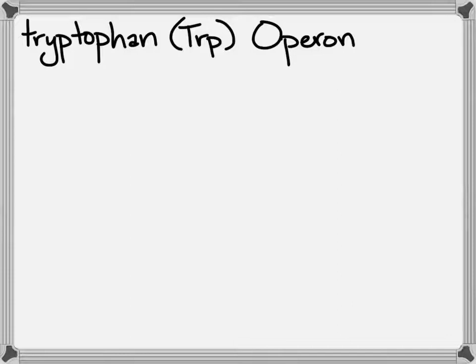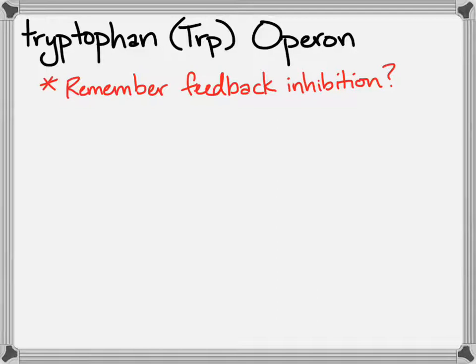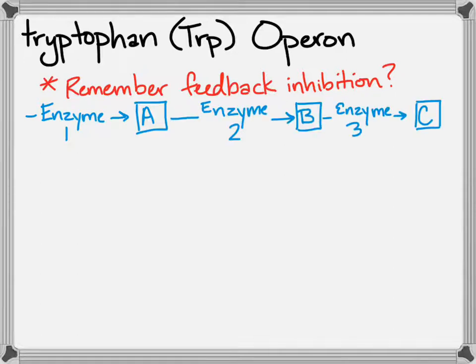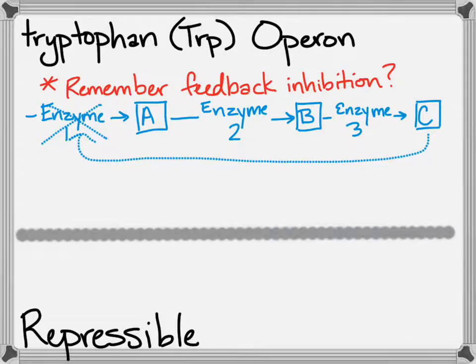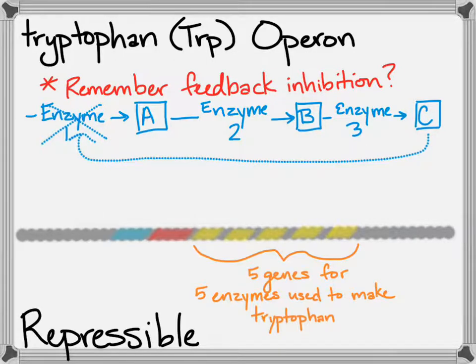Now let's look at one of the two classic operon examples. The trp operon, or tryptophan operon, has a lot to do with feedback inhibition — where a series of enzymes produce a series of products and the final product goes back and shuts off the first enzyme. Repressible operons remind me of those feedback inhibition loops. The tryptophan operon actually has five genes related to enzymes that the bacteria uses to make the tryptophan amino acid.